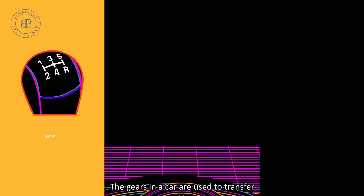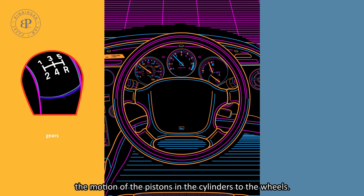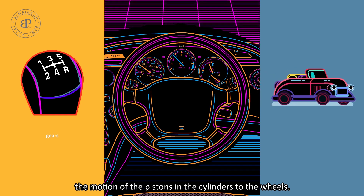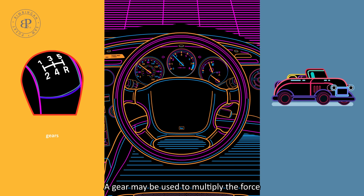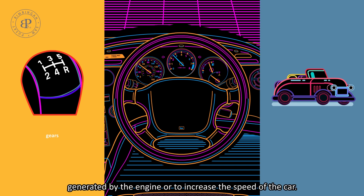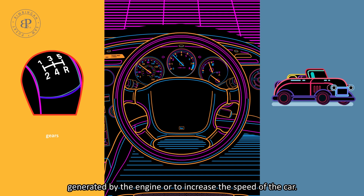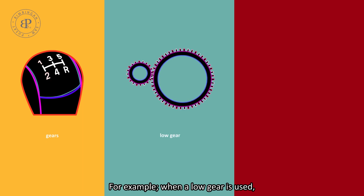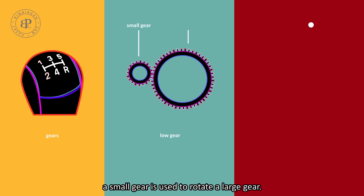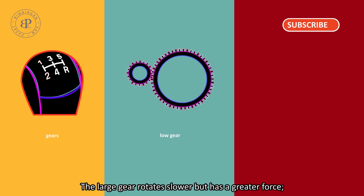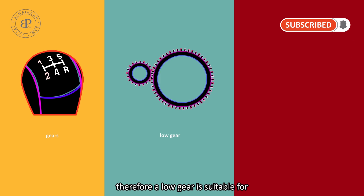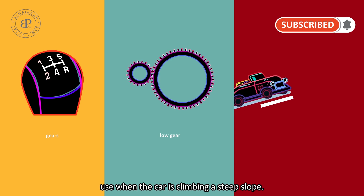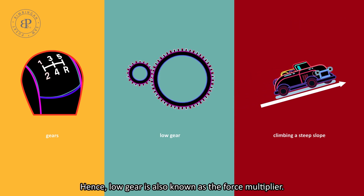The gears in a car are used to transfer the motion of the pistons in the cylinders to the wheels. A gear may be used to multiply the force generated by the engine, or to increase the speed of the car. When a low gear is used, a small gear is used to rotate a large gear. The large gear rotates slower but has a greater force. Therefore, a low gear is suitable for use when the car is climbing a steep slope, and is also known as the force multiplier.